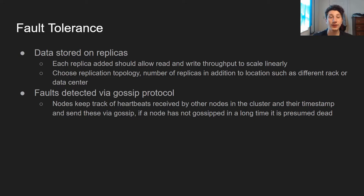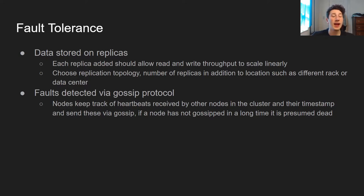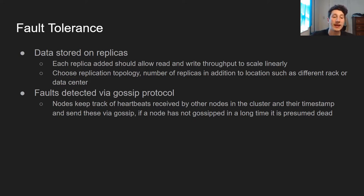With the gossip protocol, nodes keep track of heartbeats they get from other nodes. Each node locally holds what it assumes to be the last known heartbeat of every other node, which they pass around via the gossip protocol. If it's been too long since a node has sent a heartbeat, the local node will assume that remote node to be dead.